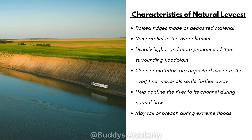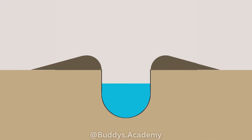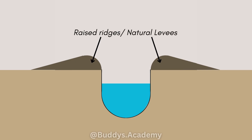Your coarser materials are going to be deposited closer to the river and your finer materials are going to settle further away. They are going to help confine the river to its channel during normal flow, and they may fail or breach during extreme floods. Looking at the diagram, you can see how your natural levees are going to keep your river in its main channel.